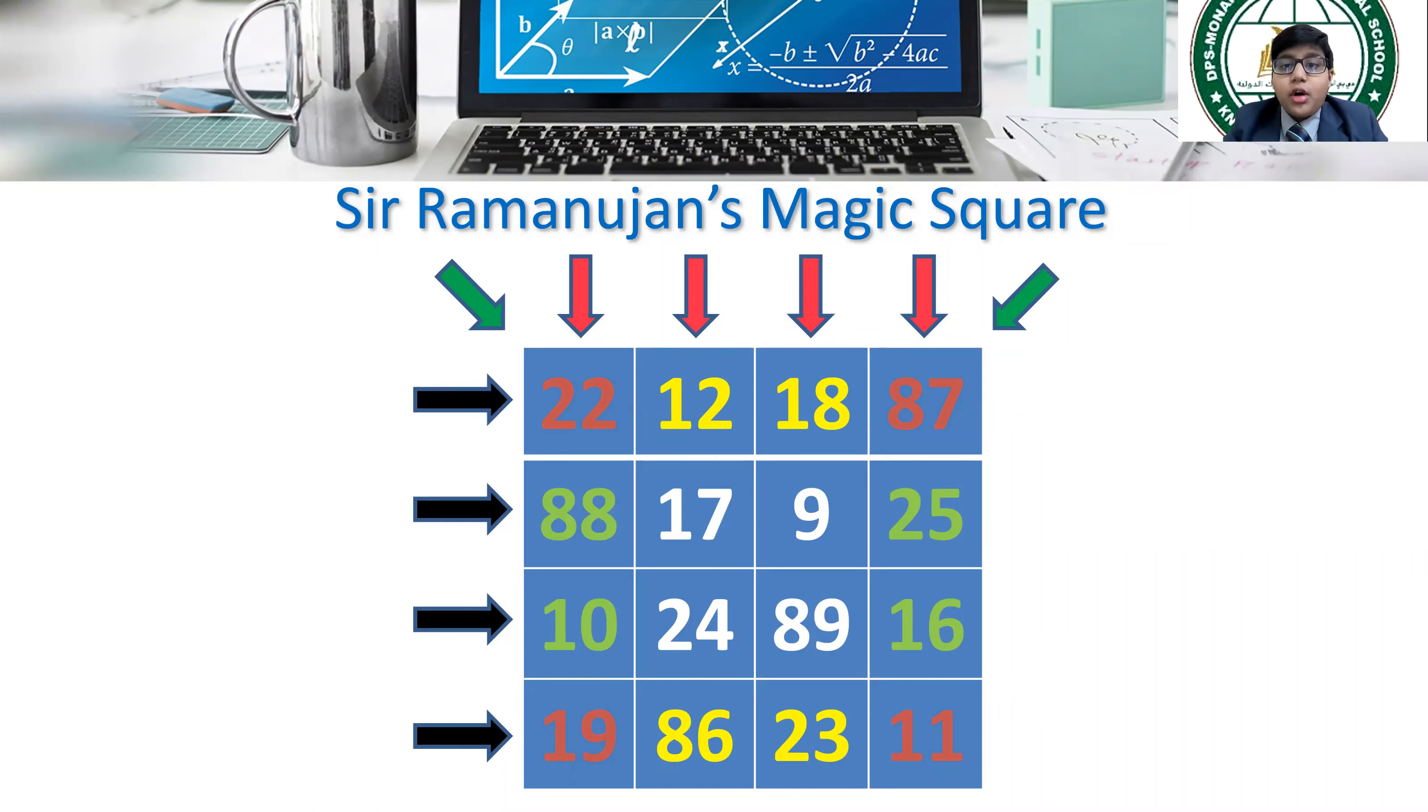Not only that, if you add the corner 4 numbers of the square, the answer will be 139. In addition, if you add the highlighted 4 numbers in yellow or green, the sum will be 139 each. And finally, the addition of the 4 white middle squares is also 139.